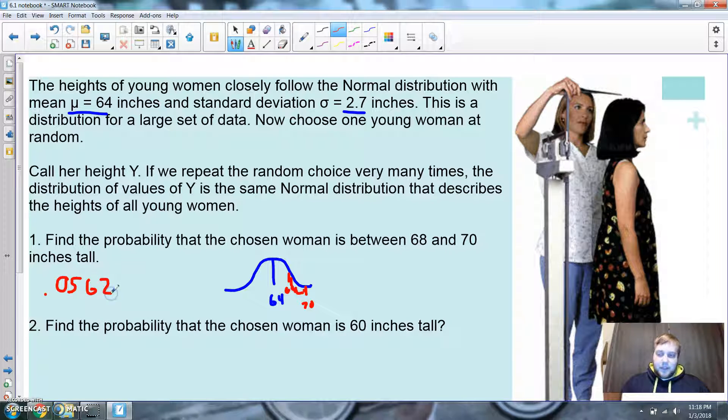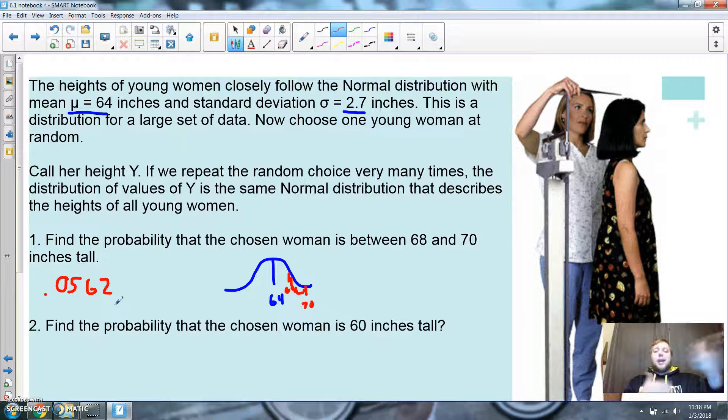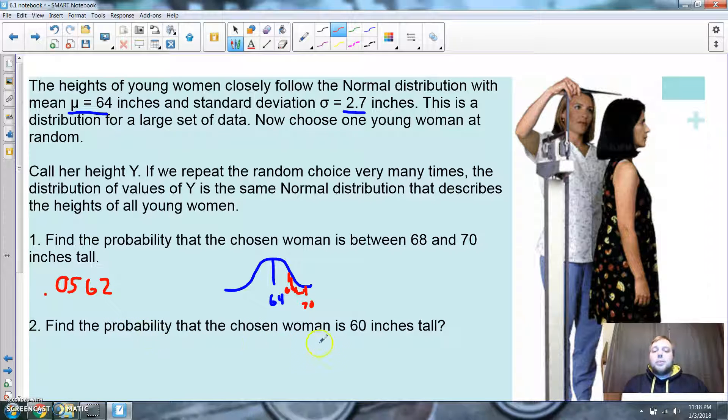All right. We're going to end this in 15 minutes. You can't hold me back. All right. So, what's the probability of a chosen woman is between 68 and 70 inches tall? You have a 5% chance of getting some random, pulling a random female in and saying, hey, yo, how tall are you? Ah, 5% chance. Almost 6%. And the probability of a chosen woman is 60 inches tall? Exactly.